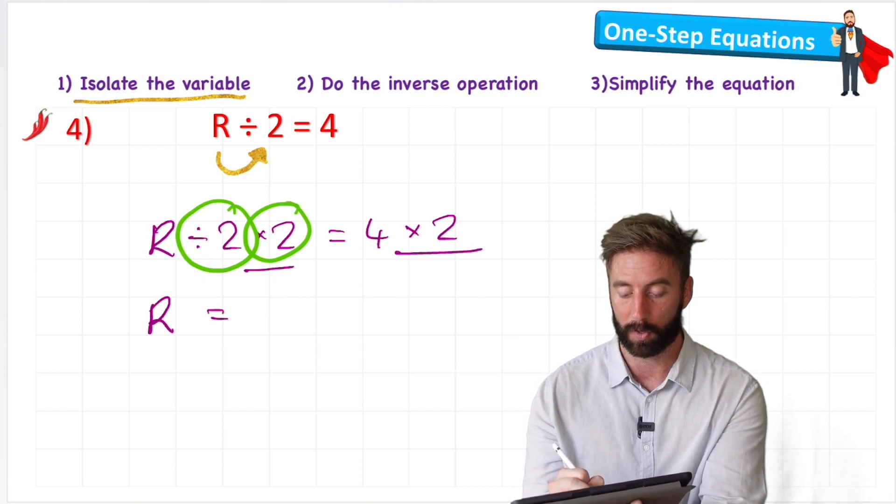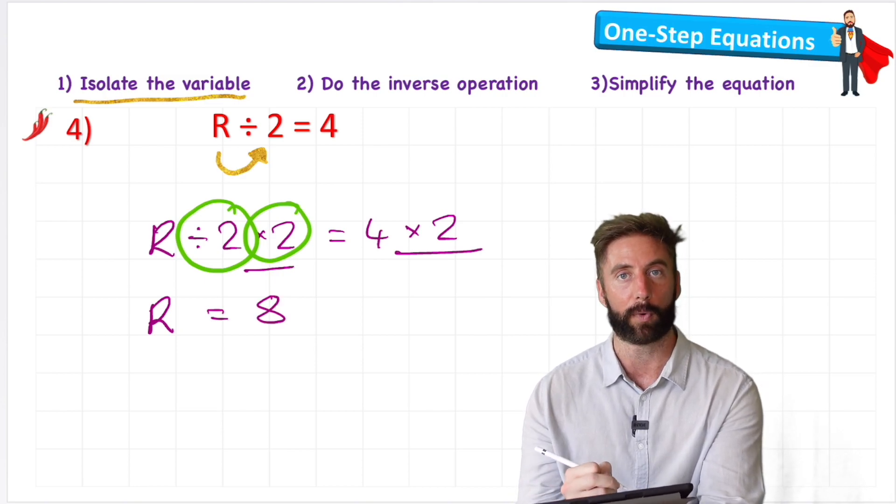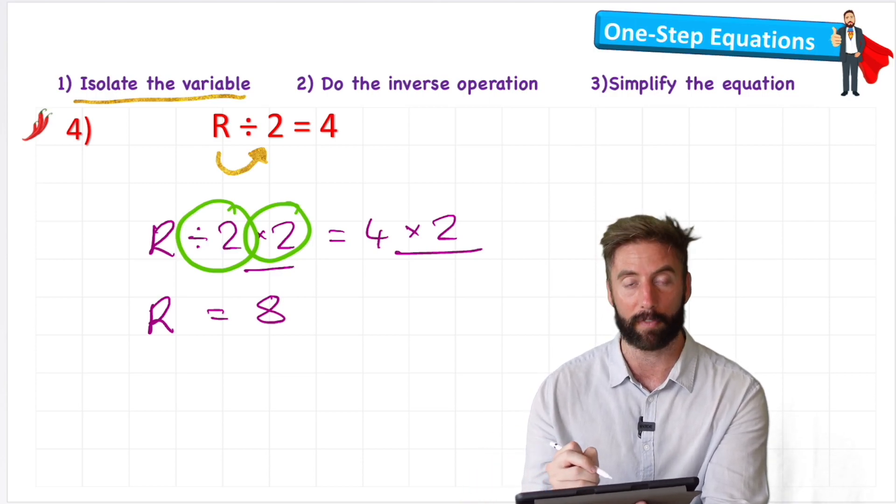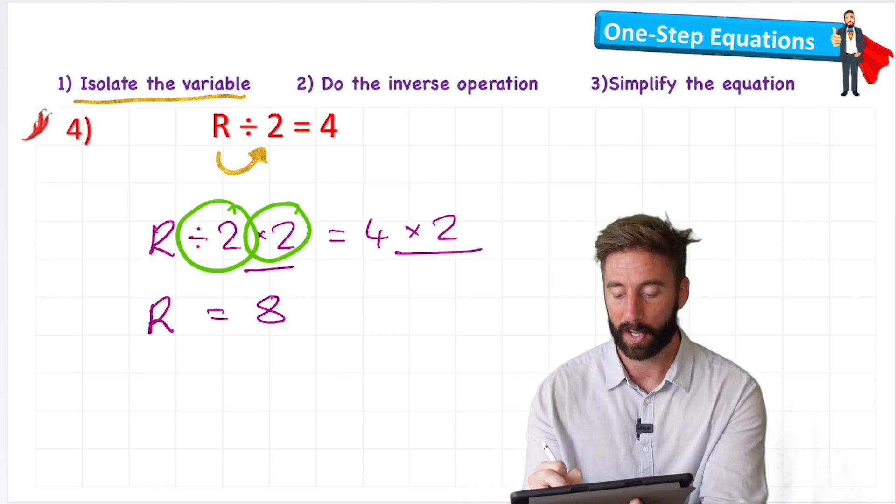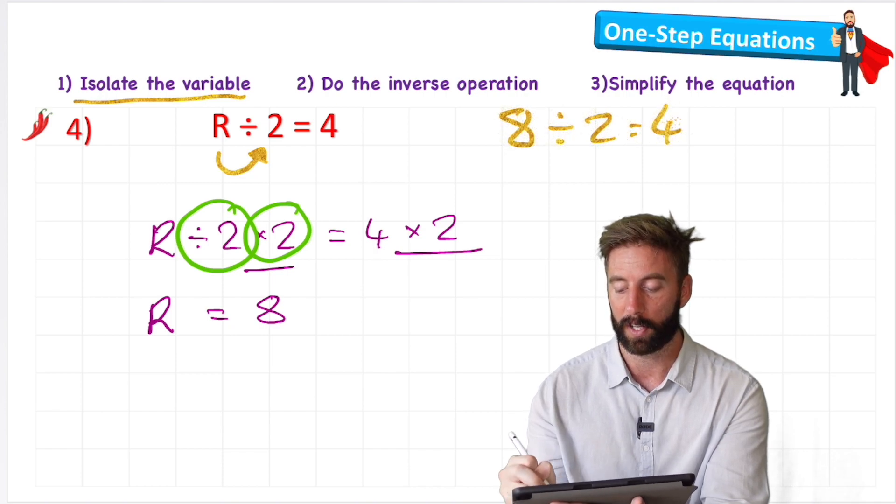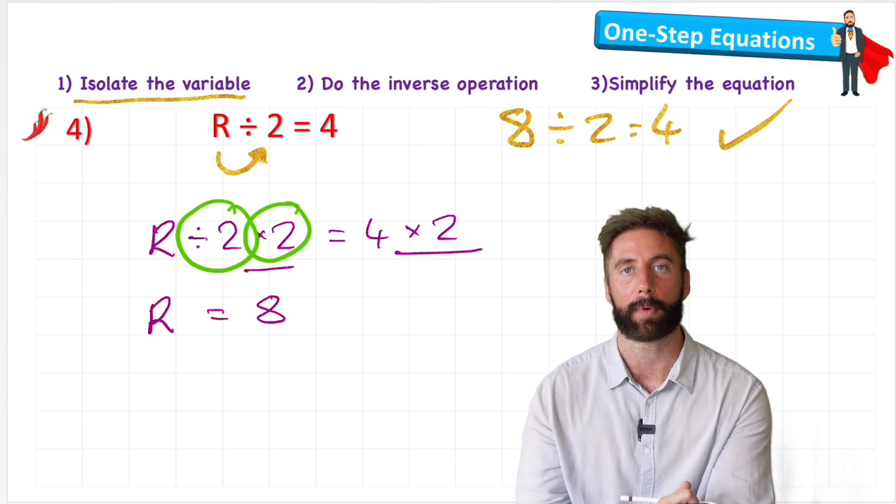And 4 times 2 is 8. r equals 8. Let's check it by substituting the value of 8 in for r in my equation. And 8 divided by 2 equals 4. Yes, it is. Give myself a big tick.